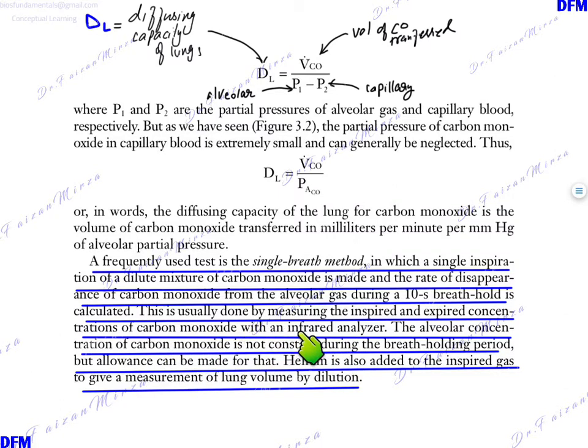We have infrared analyzer which actually measures the inspired and expired concentration of carbon monoxide to get the values of P1 and P2 and the volume transferred. During the single breath, this formula can be applied. And helium can also be added to the inspired gas to give a measurement of the lung volumes by dilution. So you can dilute the carbon monoxide gas with helium and add it to the single breath method. So the person then inhales it and you can see how much helium ends up diluting carbon monoxide.